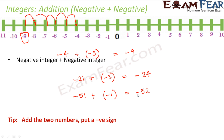As far as addition of integers is concerned, there are three scenarios: both integers positive — add them and put a positive sign; one positive and one negative — subtract them and put the sign of the bigger integer; both integers negative — add them and put a negative sign. These are the three possible scenarios for addition of integers.